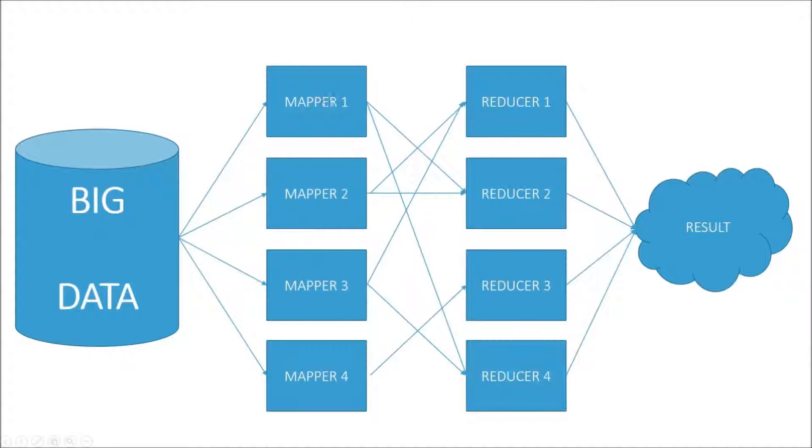So each mapper gets a chunk of the input data, and it is generating key-value pairs. And what happens is, under the hood eventually, individual keys along with all their values will be mapped to a specific reducer. So let's say key number one ends up going into mapper number one here. One of these reducers will be assigned to handle all the processing for key number one.